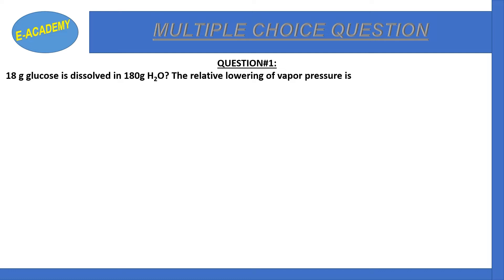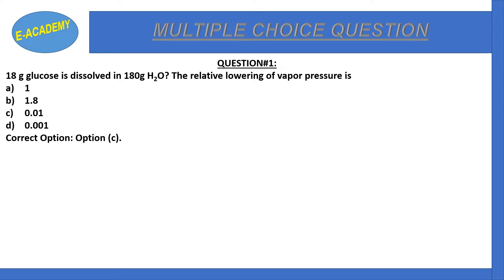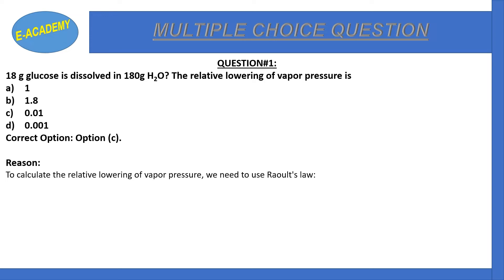Mass of glucose is 18 grams and mass of water is 180 grams. We will find the relative lowering of vapor pressure. Options are: a) 1, b) 1.8, c) 0.01, d) 0.001. Correct option is c) 0.01. To calculate the relative lowering of vapor pressure we need to use Raoult's law.